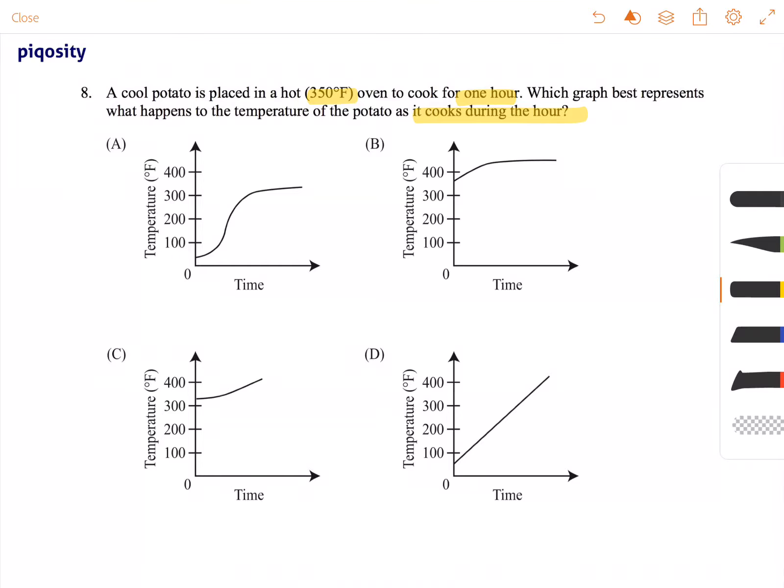So some key words: it's a cool potato, 350 degree oven, for one hour. So let's take a look at our answer choices.